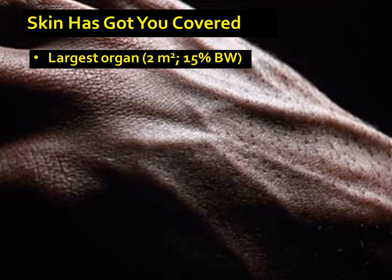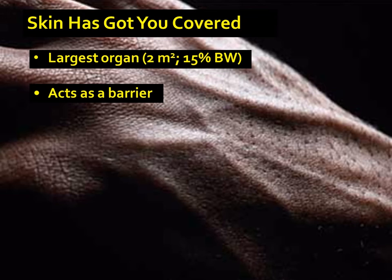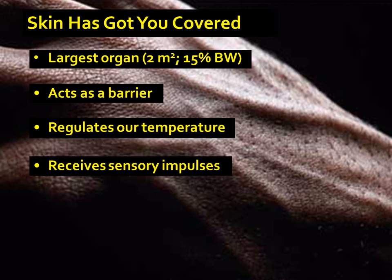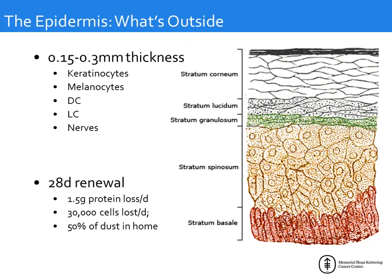The skin is the largest organ in your body. If stretched out, it covers about two square meters and comprises about 15% of your total body weight. It acts as a barrier preventing infections and radiation from reaching your internal organs, regulates your temperature by vasodilation or vasoconstriction, receives sensory impulses, and helps synthesize vitamin D. The outermost layer is the epidermis — about 150 to 300 microns thick — composed 90% of keratinocytes, plus melanocytes, dendritic cells, Langerhans cells, and free nerve endings.